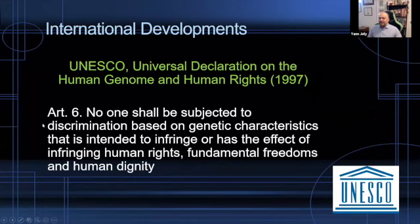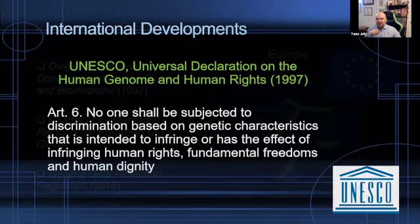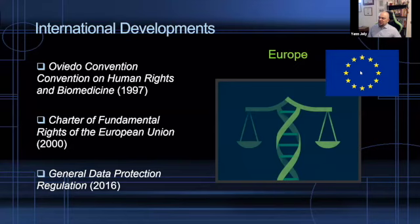Looking at international developments, we see that the problem of genetic discrimination was highlighted fairly early on by international organizations. UNESCO, already in 1997, in its Universal Declaration on the Human Genome and Human Rights — which has been extremely influential at the national policy-making level — clearly stipulated at Article VI that no one should be subjected to discrimination based on genetic characteristics intended to infringe or that would have the effect of infringing human rights, fundamental freedoms, and human dignity.